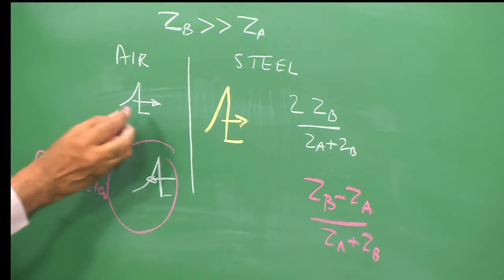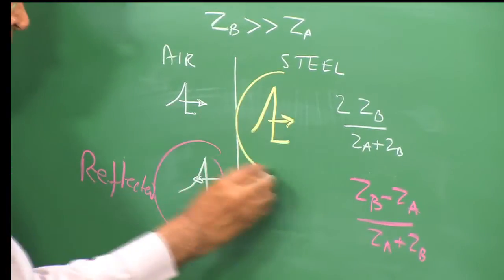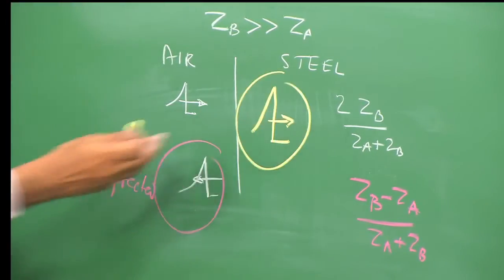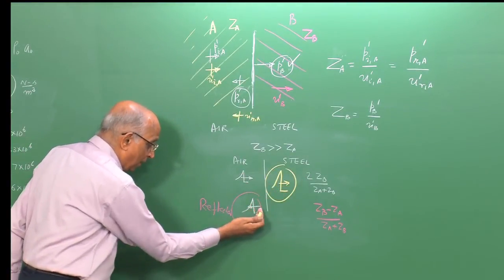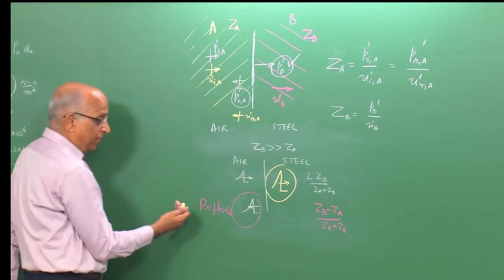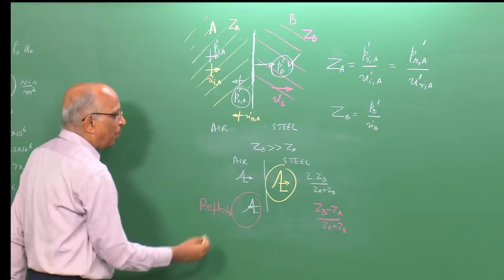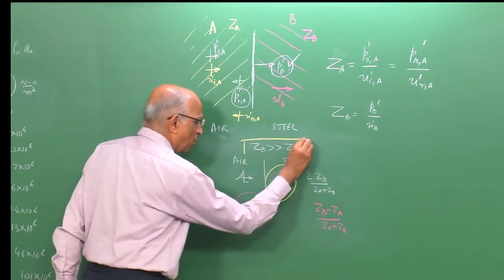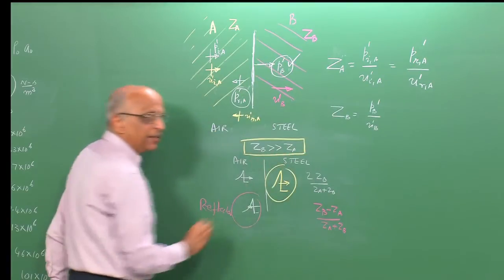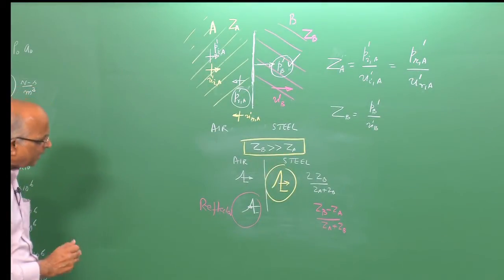So I am now able to find the transmitted compression wave and the reflected compression wave. This is the solution for the particular case of Z_b greater than Z_a.